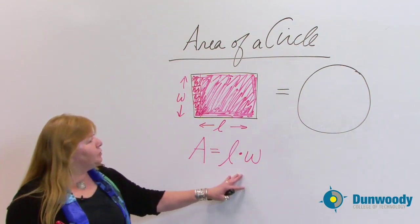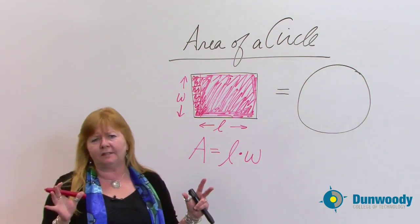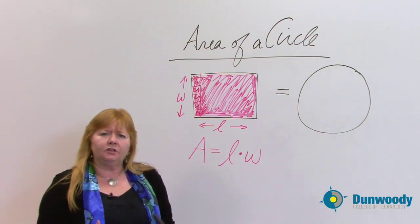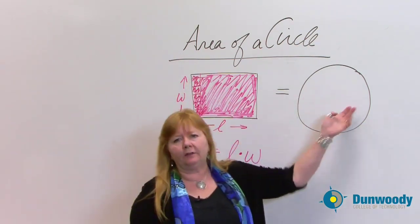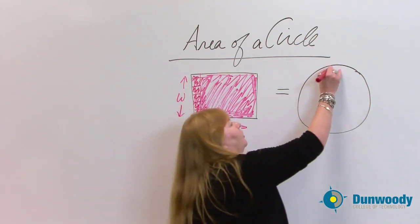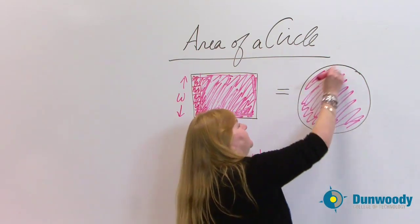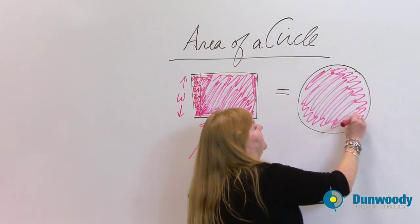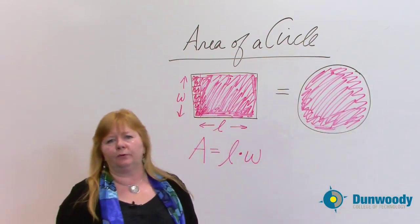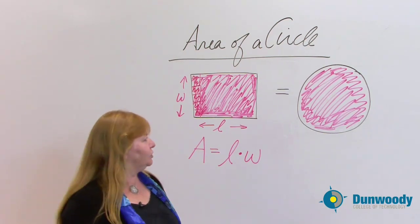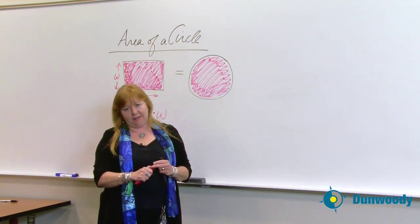Right now what I want to do is I want to show you how the ancients had to really think beyond what we feel is comfortable to start to make a relationship between what they knew and what they were trying to figure out. And that was, how do we ever figure out the area of a circle, which means I would be coloring this all in. Let me show you a nice little proof where the ancients had to go and walk beyond what was comfortable and think outside the box.